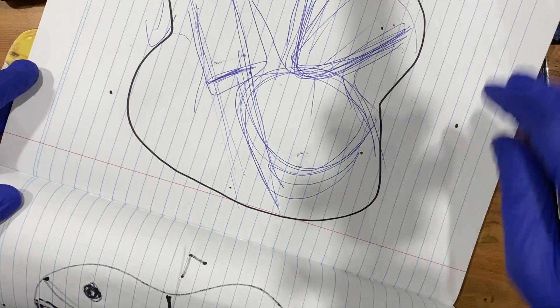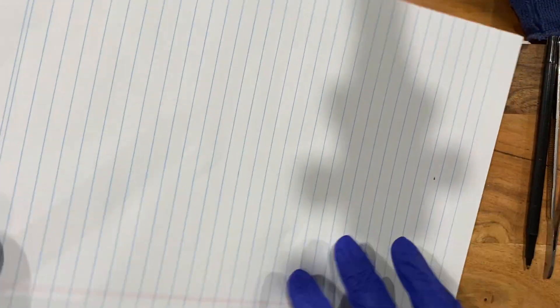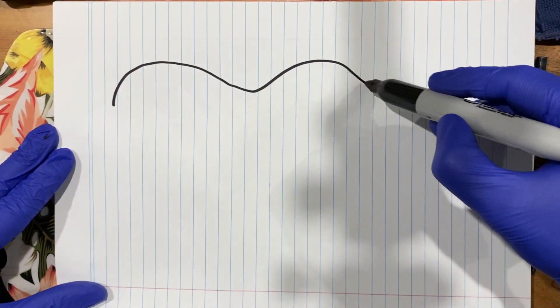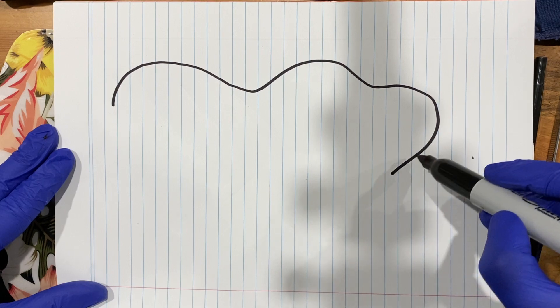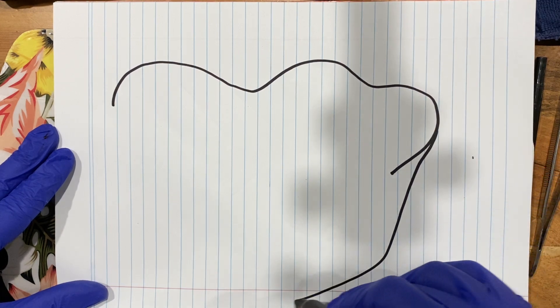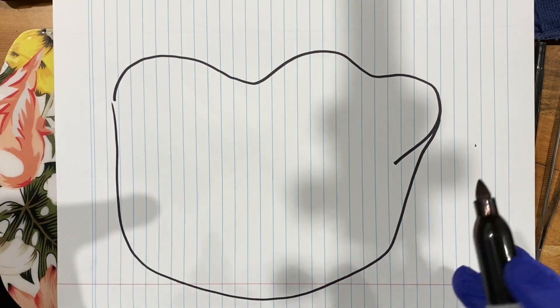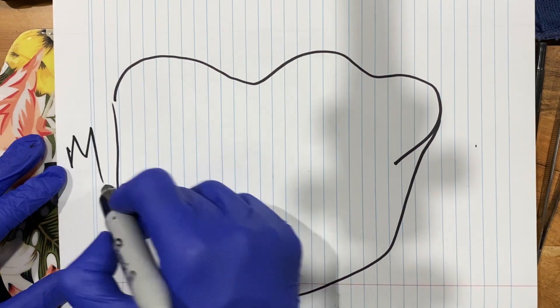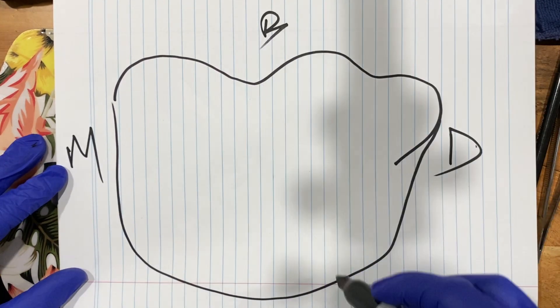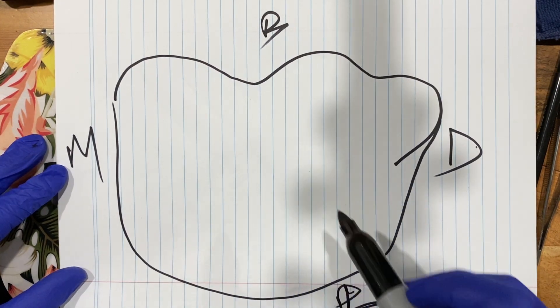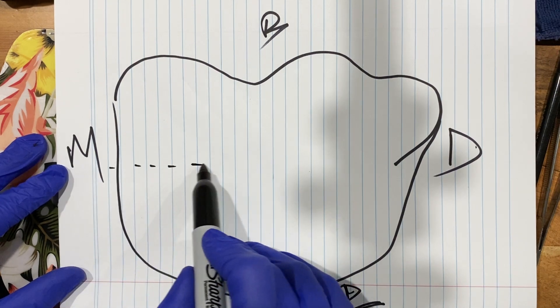If I make a quick diagram again. Because the lower six is normally a bit more triangular, yeah? Mesial, distal, buccal, palatal or lingual. Okay, it's a lower tooth.